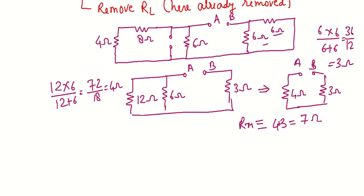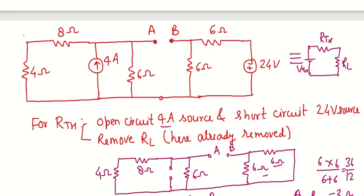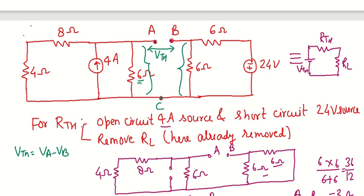The next task is to find VTH — the potential difference across terminals A and B, equal to VA minus VB. Suppose there is a terminal C. We need to find the voltage drop across the 6 ohm resistance on each side. Several methods are available: source transformation or mesh analysis. However, mesh analysis leads to a super mesh, so the easiest method is current division.